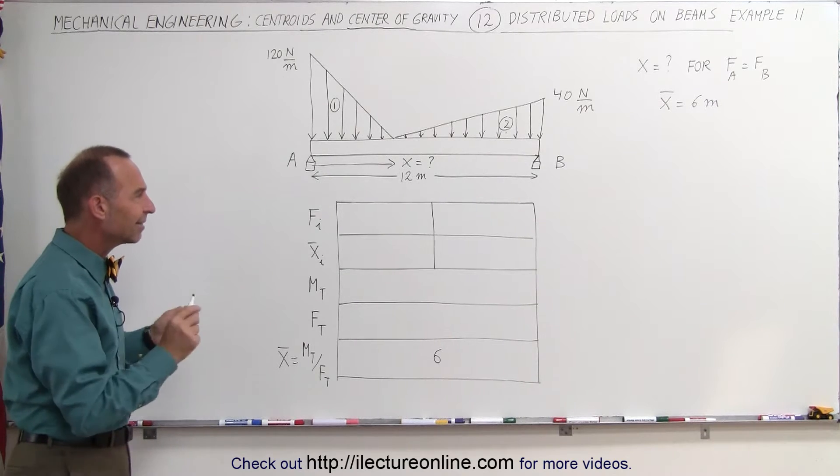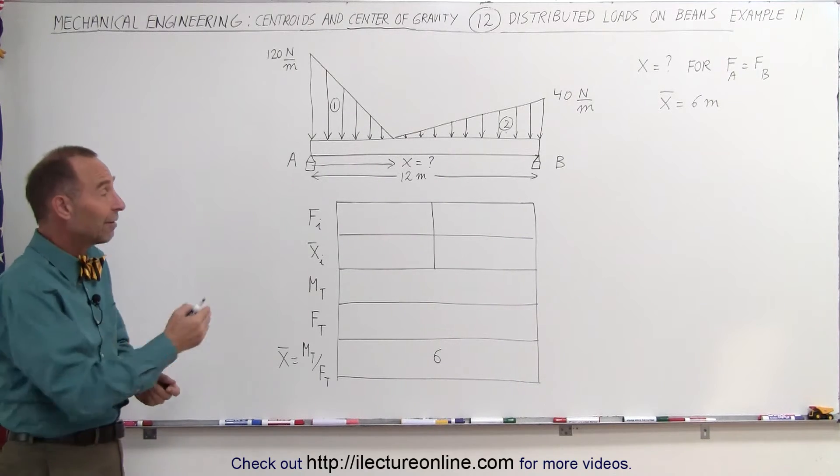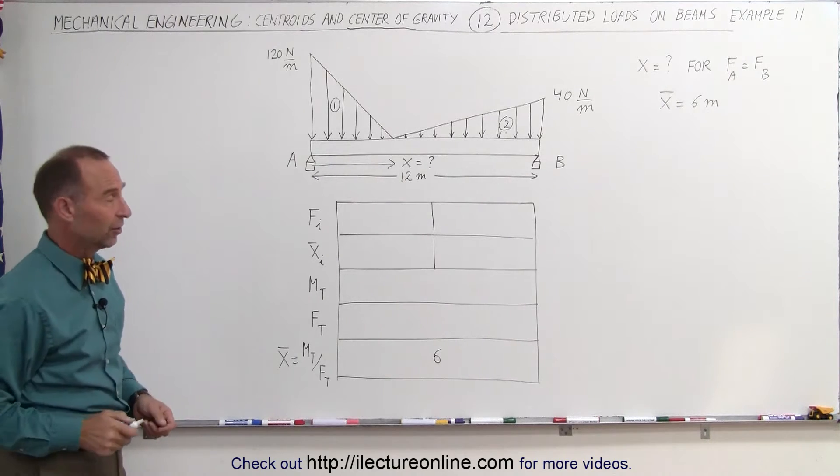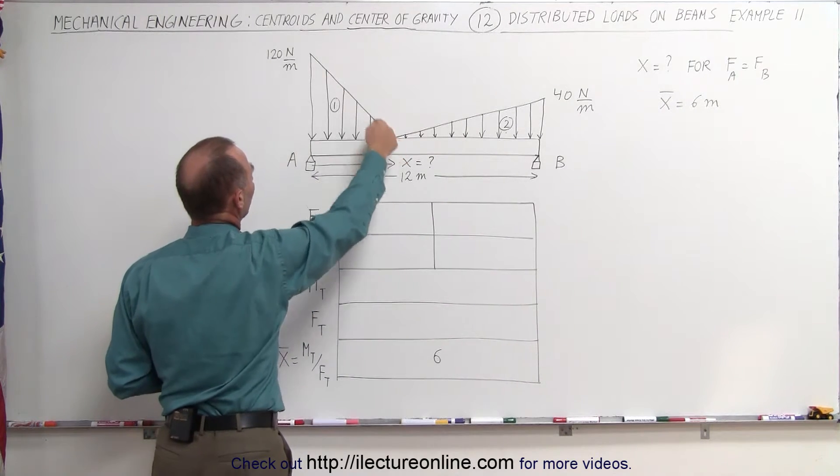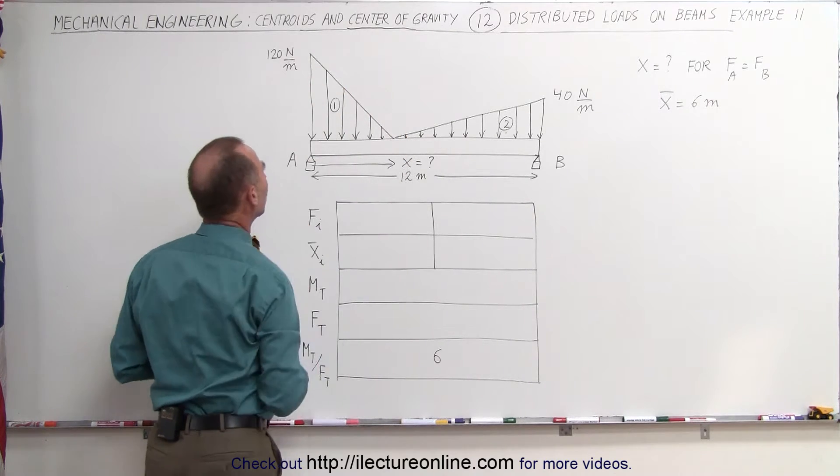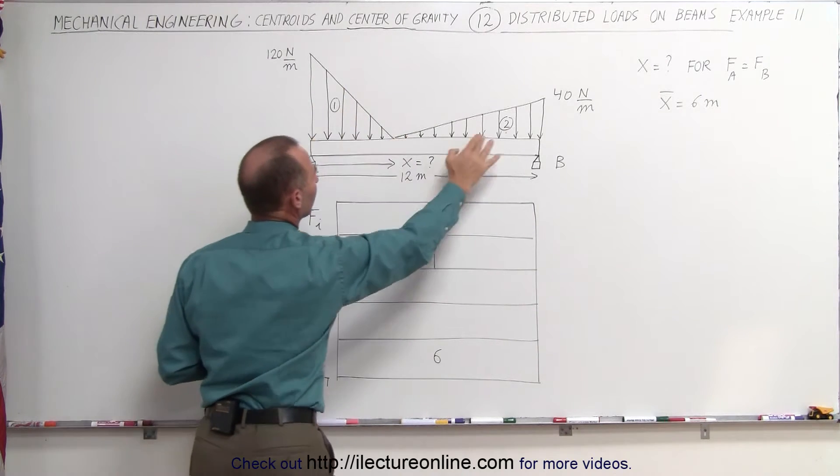So we'll do this the exact same way, except with numbers, we'll have the variable x everywhere in these boxes. So first of all, we find the force caused by the total force caused by the first load segment. This is segment number one, this is segment number two.